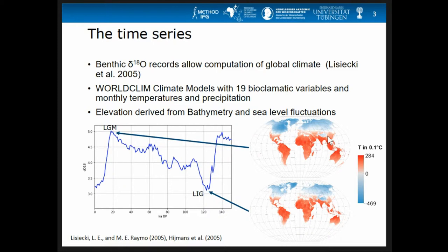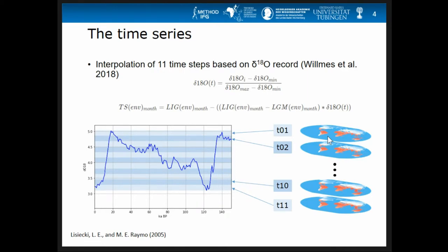We made this dataset for a variable environment. The idea is based on delta O18 records — here is an example spanning from the Last Interglacial about 125,000 years ago to the Last Glacial Maximum. For the maxima of this chart we have climate models: the WorldClim dataset that Felix Hanselowski was already speaking about. They are always at the extremes. Here we have the LGM model from the Max Planck Institute, and here the Otto-Bliesner model — you can already see the shift: it is colder in Europe in one and warmer in the other.